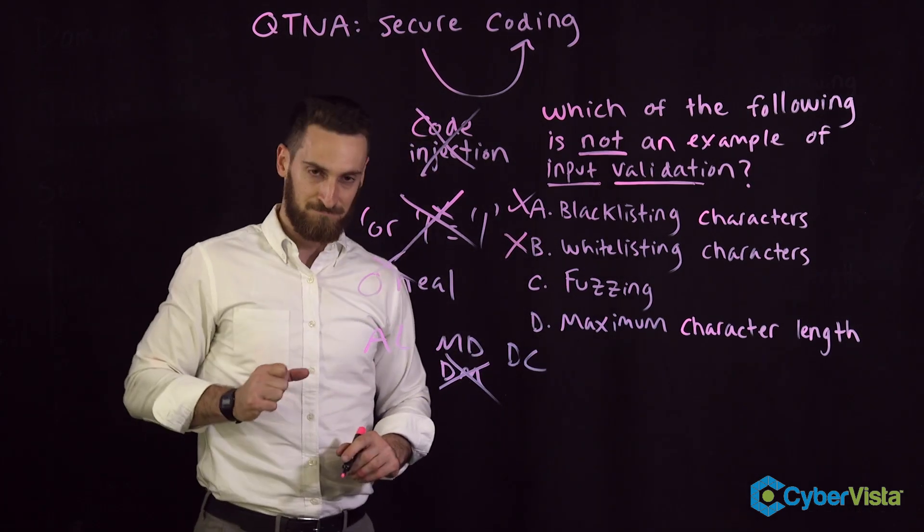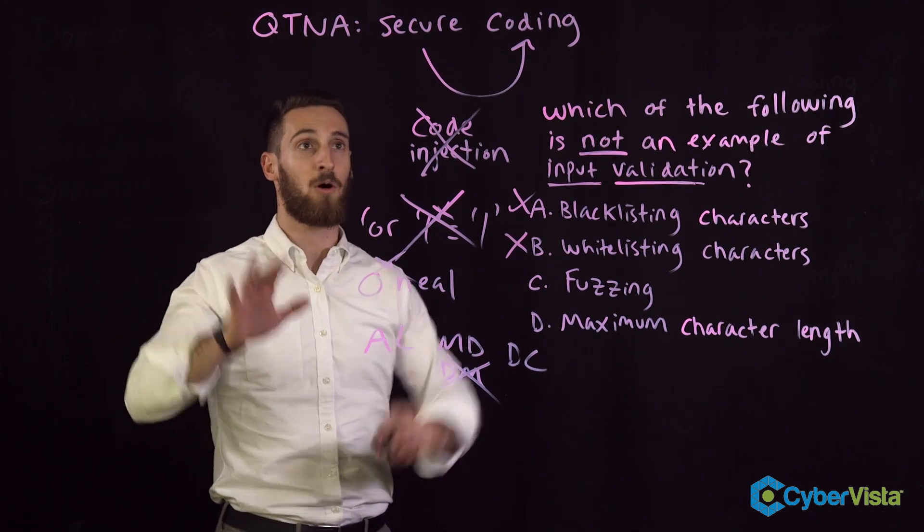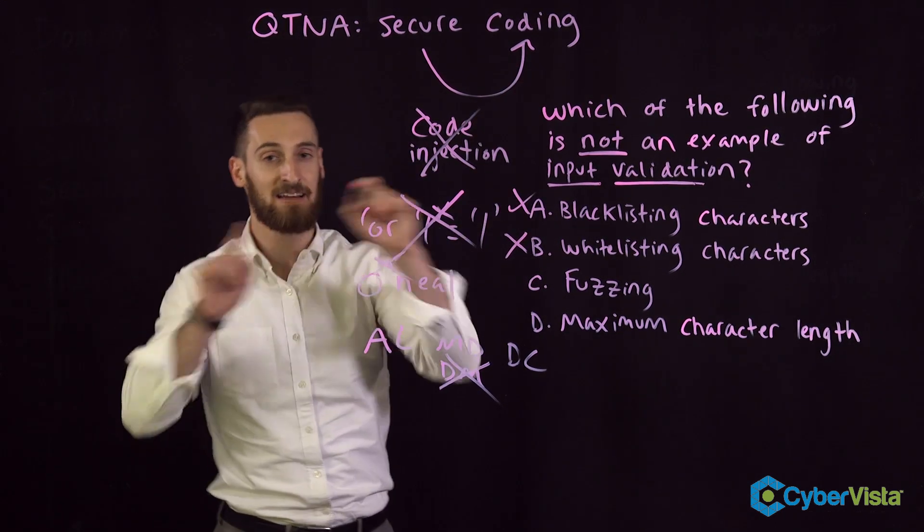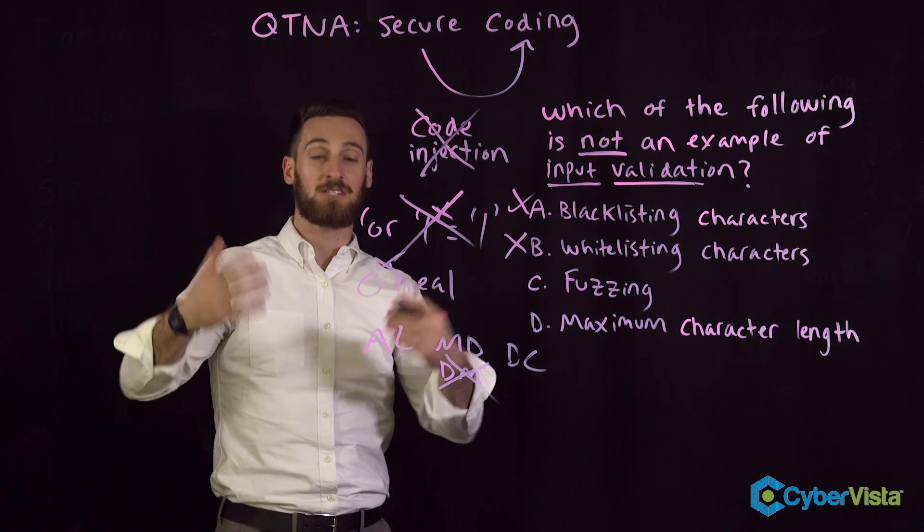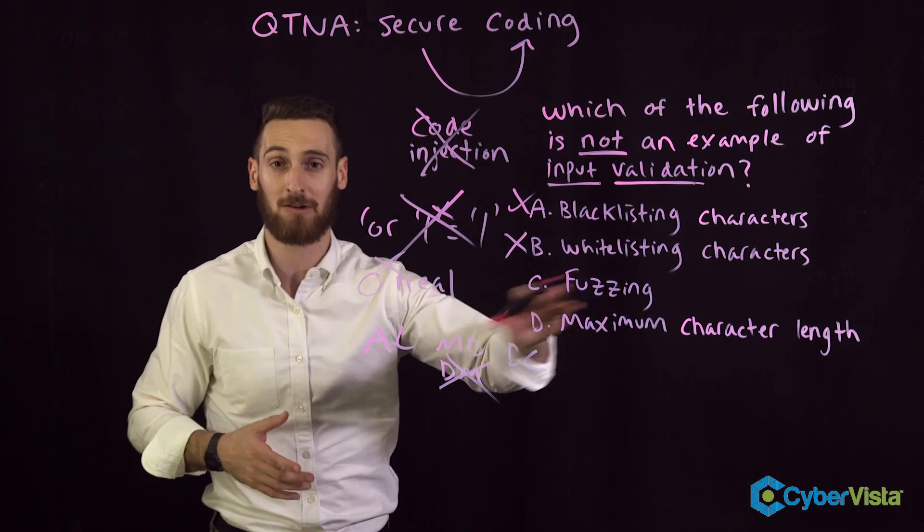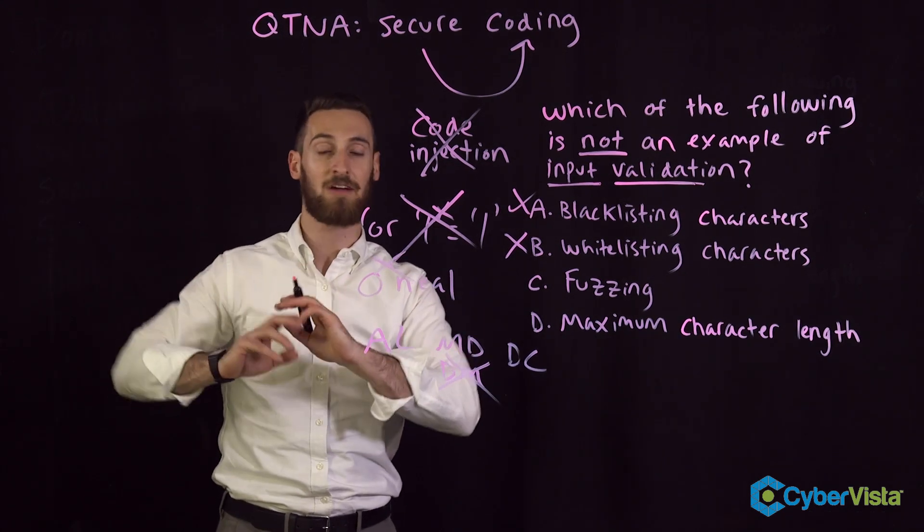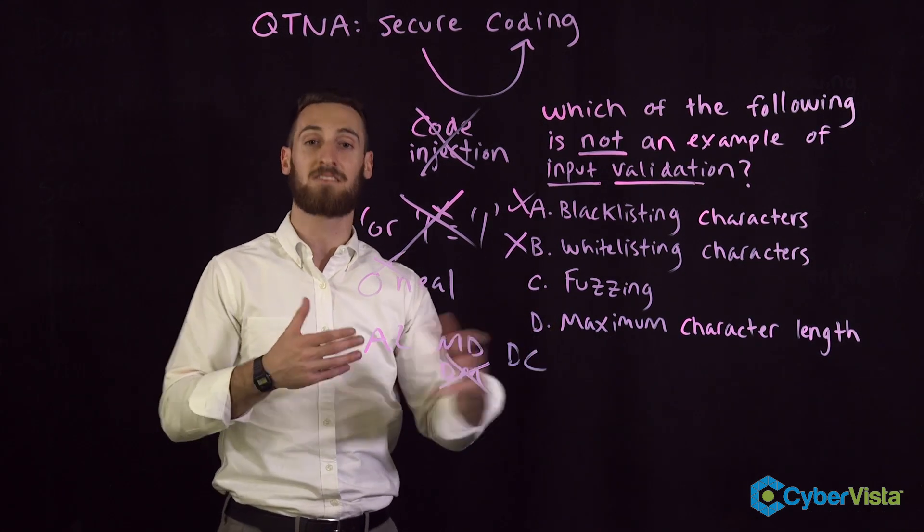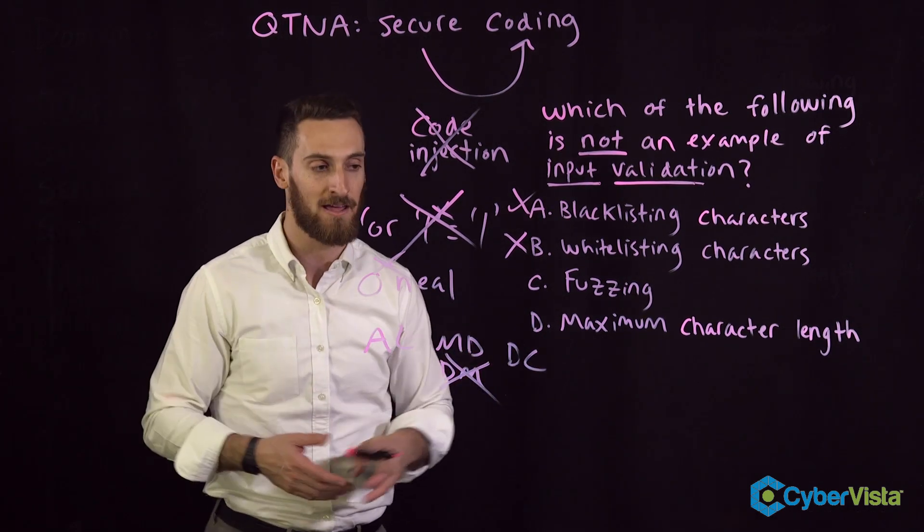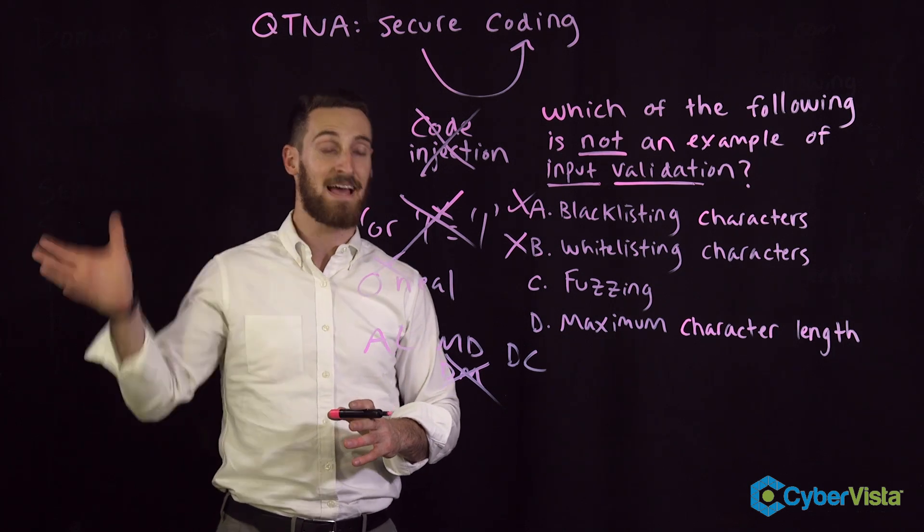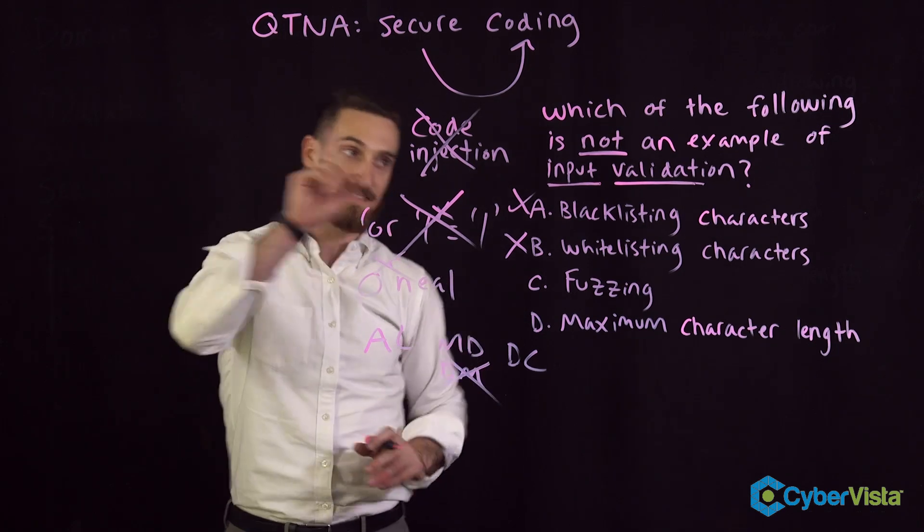How about fuzzing? Fuzzing is a very important part of secure coding, but it's not input validation. Secure coding involves running tests on your code, and that's exactly what fuzzing is. Fuzzing is fuzz testing when you throw a whole bunch of random input at an application to see how it responds - does it crash, does it respond in another negative way? Fuzzing is more about testing. It doesn't fall under the umbrella of input validation. So we know fuzzing is not input validation. It's the right answer.